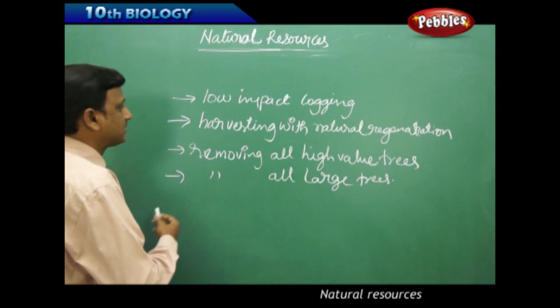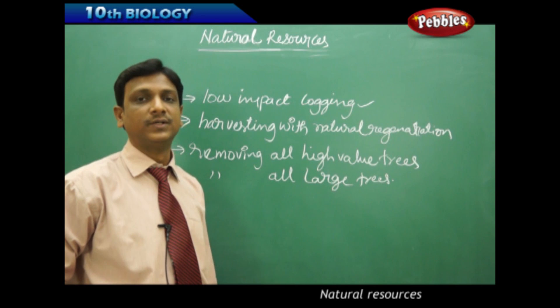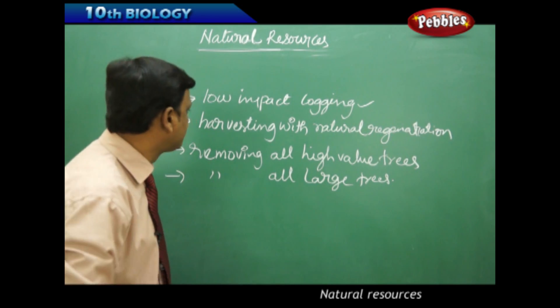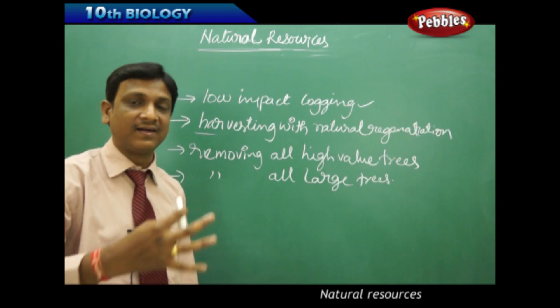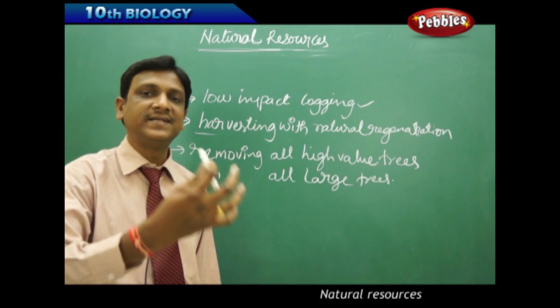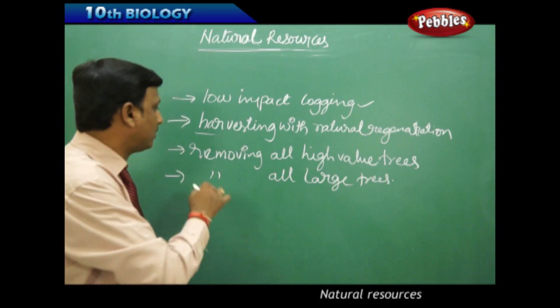Now let us see the various steps that can be taken. Low impact logging methods or techniques are to be followed to conserve the forest. Next, harvesting with natural regeneration in mind. When the harvest is taken from a forest, see that the product is regenerated. That idea must be there in the mind.